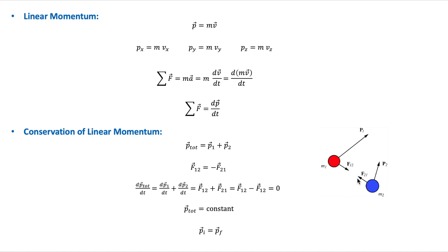During the collision, each body exerts a force on the other. This force is known as an impulsive force because it acts for a short period of time compared to the whole motion of the objects, and it is usually very large. To solve collision problems using Newton's second law, it is required to know the exact form of the impulsive forces.